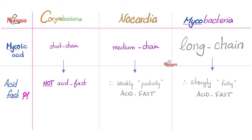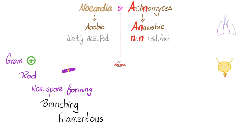Let's recap: Corynebacteria have short chain mycolic acid, therefore not acid-fast. Nocardia has medium chain mycolic acid, therefore weakly acid-fast. Mycobacterium has long chain mycolic acid, therefore strongly acid-fast. Today we're talking about Nocardia and Actinomyces — both gram-positive rods, non-spore-forming, branching filaments that resemble fungi. Nocardia is aerobic and weakly acid-fast; Actinomyces is anaerobic and not acid-fast.